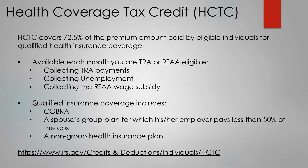Eligible individuals can receive a tax credit to offset the cost of their monthly health insurance premiums for 2020 if they have qualified health coverage for the HCTC. A qualified health plan offered through a health insurance marketplace is not a qualified coverage for the HCTC. HCTC is available each month you are TRA or RTAA eligible — you are either collecting TRA payments, unemployment payments, or RTAA payments. This tax credit is subject to change after 2020.